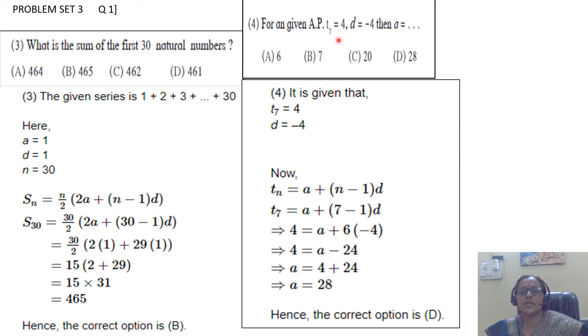Fourth example: For an arithmetic progression, t7 is 4 and d is -4. Find a. Four options are given. t7 = 4, d = -4. tn = a + (n-1)d, so t7 = a + 6(-4) = a - 24. Therefore 4 = a - 24, so a = 28. The correct option is D.